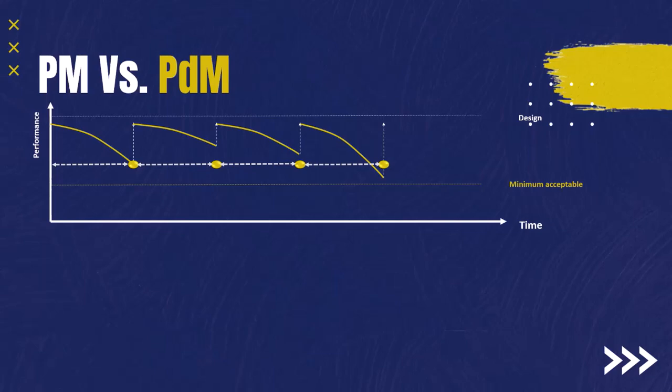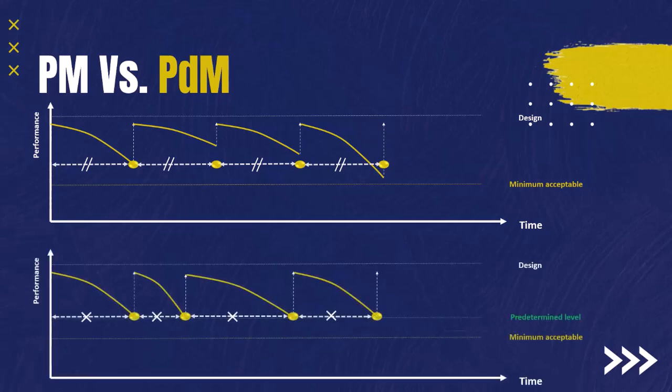Here we can see a comparison between a preventive maintenance plan and a predictive maintenance plan. In preventive maintenance, the time interval between each maintenance activity is constant because it is time-based. However, we sometimes interfere while the asset is still in good condition, wasting resources, and sometimes failure occurs before the maintenance operation — because most failures follow a random pattern. In a predictive maintenance plan, the time interval between each maintenance operation is not constant because it depends on the asset's condition: sometimes condition deteriorates faster, sometimes it takes longer.